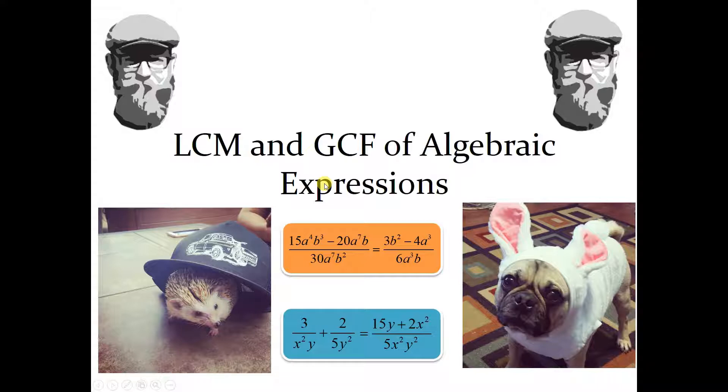The thing you might not be connecting the dots with is that greatest common factor is used for reducing, and lowest common multiple is used for finding the common denominators. But finding the LCM and GCF of algebraic expressions can be a little tricky, so I'm going to show you how to do that in this video.